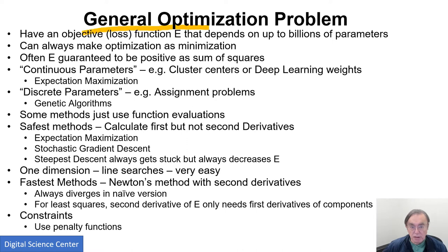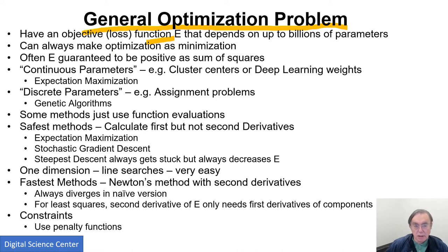Let's look at some features that the optimization problem has. It always has a function, or maybe a collection of functions. When I was doing it 50 to 60 years ago, they were tens and possibly hundreds of parameters. Now they can go up to billions of parameters for a deep learning network. Optimization can always be thought of as minimization. An important feature of the thing we're trying to minimize is that it's often positive — often because they're constructed as a sum of positive things, such as the sum of squares in classic least squares optimization.